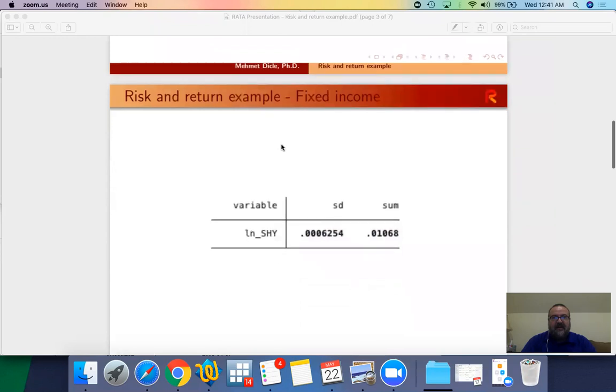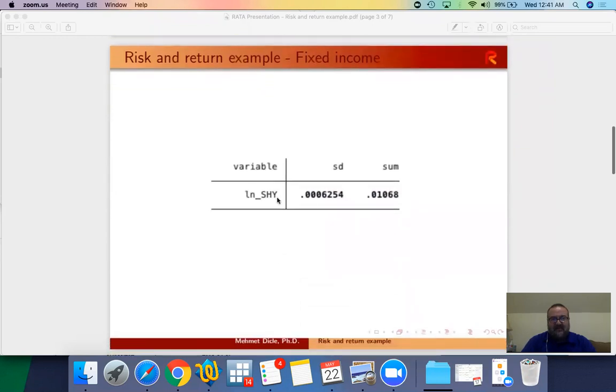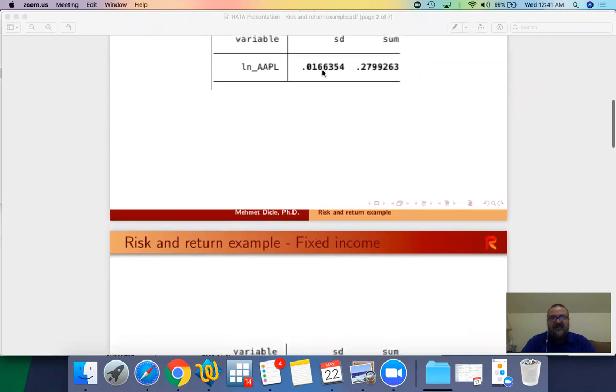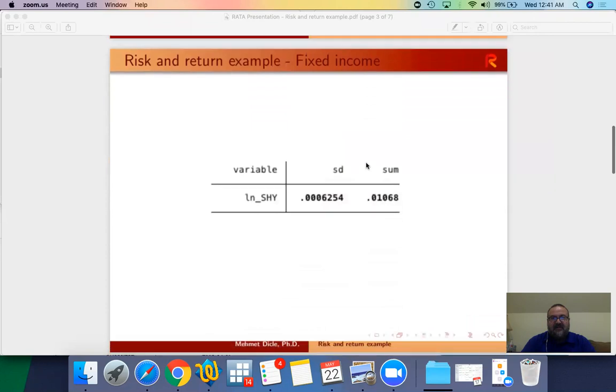Now if you look at a fixed income ETF, SHY, which is one to three year U.S. Treasuries, standard deviation is significantly lower at 0.0006. Corresponding to that is the total return which is also significantly less, about one percent. Apple had 0.016 for the standard deviation and 28 percent total return since January 1st, whereas the fixed income has significantly lower risk and significantly lower return.